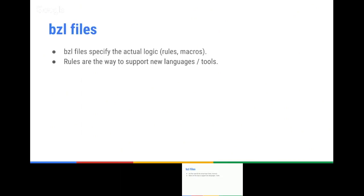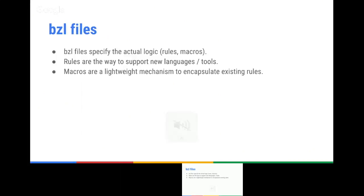Rules are a way to support new languages and new tools. It's not just programming languages like C++ or Java — you can imagine lots of other tools. If you want to generate a LaTeX document, you could put your source file there and it will generate a document. You could have rules to create data: if you have a video game and want to generate images in different sizes, you can use rules for that. Macros are just a lightweight mechanism to encapsulate existing rules. But be careful — they don't scale well.